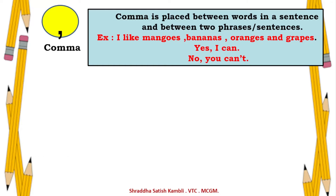For example, instead of saying 'I like mangoes and bananas and oranges and grapes', you use commas: 'I like mangoes, bananas, oranges and grapes.' Using 'and' again and again is grammatically wrong, so we use commas. Another example: 'Yes, I can. No, you can't.' — commas used between two phrases or sentences.